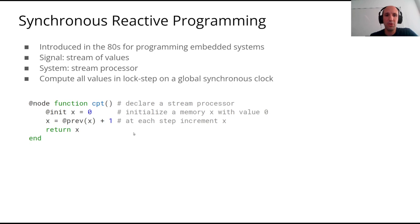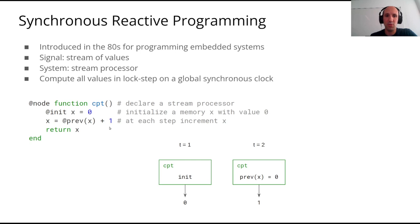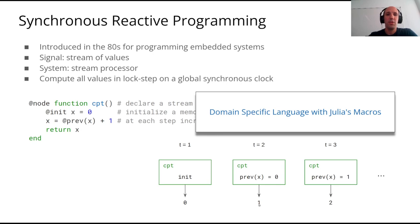Here is a very simple example of a counter in our DSL. You start by initializing a memory X with value 0, then you increment this value by 1 at each time step. At time t=1 you are just initializing X and outputting its value 0. Then the previous value was 0, so you increment it by 1 and output its value, and so on.